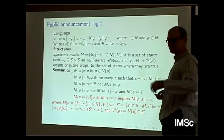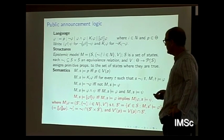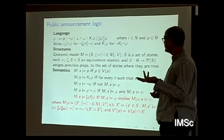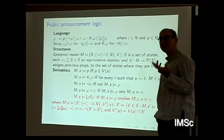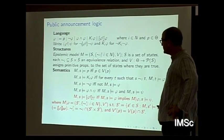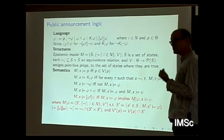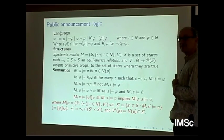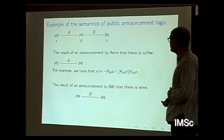Going through the standard semantics: we have a propositional part and the standard modal part — you know phi if in every indistinguishable state t from your current state s, phi is true. The special thing about this logic is the public announcement modality. After phi, psi is true in a state if — on condition that phi is true — in the restriction of the model to all states where phi is true, the postcondition psi holds. We define the model restriction in the obvious way.